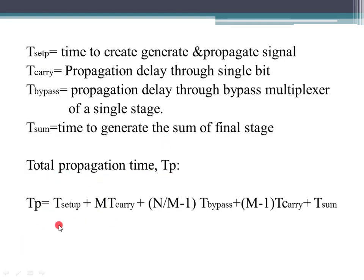The total propagation time is: T_setup for the first block (m times T_carry for carry generation), plus (N/m minus 1) into T_bypass for the bypass stages, plus (m minus 1) into T_carry for carry propagation in the last block, plus T_sum for the sum generation.